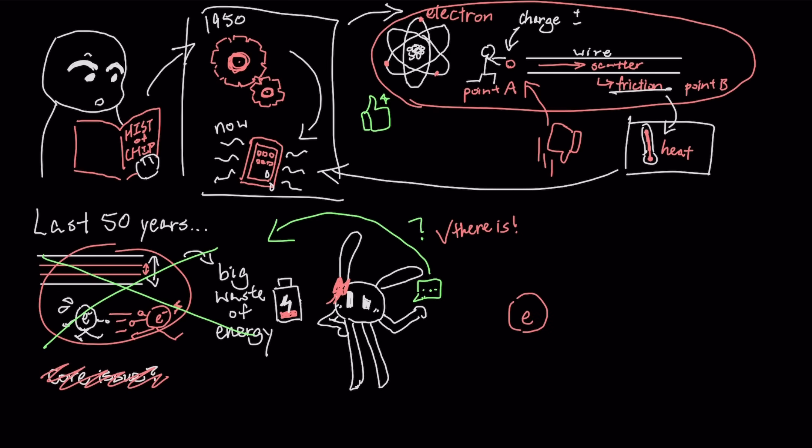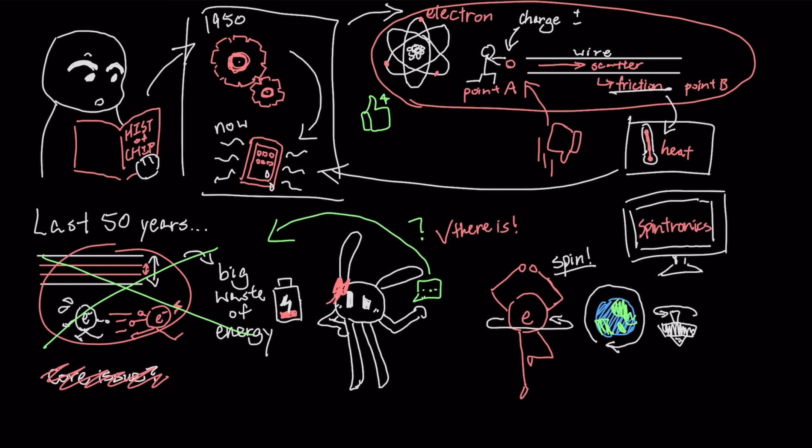Electrons have another intrinsic property called spin, which you can think of as the electron rotating on its own axis, almost like a tiny planet or a spinning top. The field of spintronics is trying to build computers that rely less on pushing the electron forward and more on flipping its spin state.